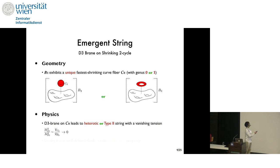Okay, let me elaborate a little bit. So when the B3 exhibits a unique, fastly shrinking curve fiber C0, the D3 brane can wrap C0, and this leads to an effective heterotic or type 2 string depending on the genus of C0. And the tension of this string is computed by the volume of C0, which goes to zero, and therefore this string produces a light tower of excitation modes. Importantly, we have a unique species of most tensionless critical string thanks to the uniqueness property in geometry. So the new duality frame is well-defined for us.